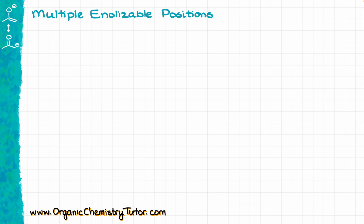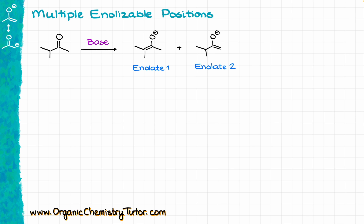But what happens if we have multiple enolizable positions? Up to this point, we saw examples where only one enolizable position was available. Now, consider an example like this: I have two alpha positions — the alpha position on the right side with a proton, and the alpha position on the left side with a proton as well. If we are using some sort of a base to deprotonate this carbonyl, then we can easily make two different enolates: the left enolate where the double bond is between the carbons on the left side, and the right one where the double bond is on the right side.